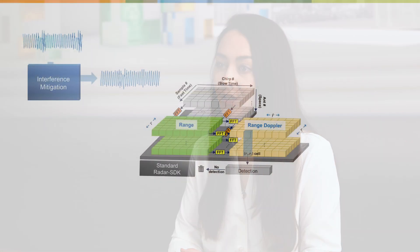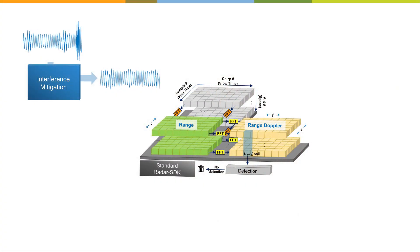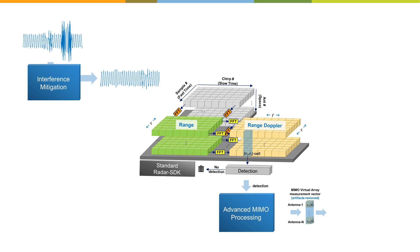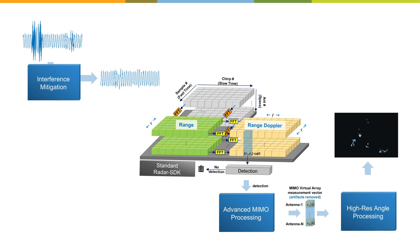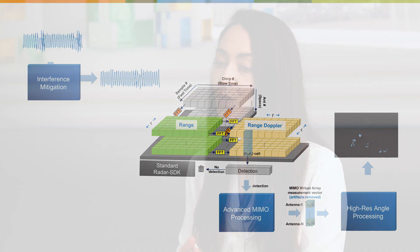To support the transition into higher levels of autonomous driving, radar sensors need to see more at finer resolution and longer range. Achieving this by simply expanding the hardware is not a sustainable option. Therefore, making efficient use of the hardware is essential. Our Premium RADAR SDK provides advanced MIMO techniques that deliver finer angular resolution and elevation sensing. With that, the benefits of a larger antenna array can be achieved in a smaller one at only a fraction of the cost.